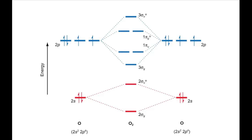The 2px and 2py orbitals interact together to give pi u bonding orbitals and pi g antibonding orbitals. Remember, the pi orbitals are always in pairs, so there are two bonding orbitals that go down in energy and two antibonding orbitals that go up in energy. Pi interactions are generally weaker than sigma interactions as they occur at 90 degrees to the other atom. This means that the pi bonding orbitals are not as low in energy as the sigma bonding orbital, and the pi antibonding orbitals are not as high in energy as the sigma antibonding orbital.